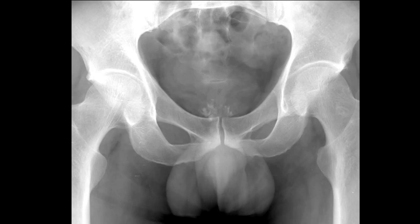This is a 40-year-old male with visible calcifications in the expected area of the prostate. The prostate is usually seen around the pubic symphysis, usually a little bit lower or overlying it. Importantly, prostate calcification is not related to prostate cancer — if you see calcification of the prostate, that is not related to prostate cancer — and this is what it looks like on an X-ray.